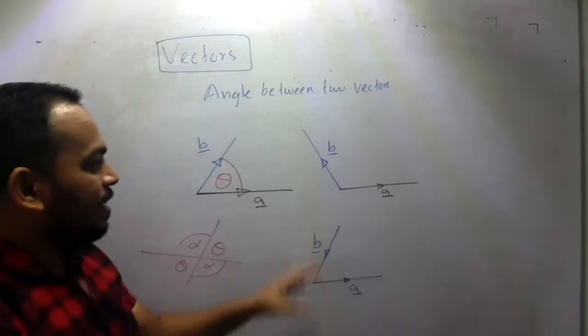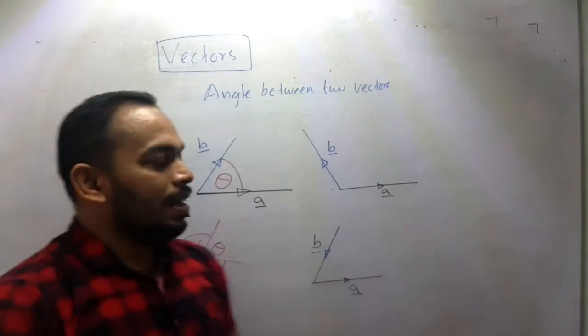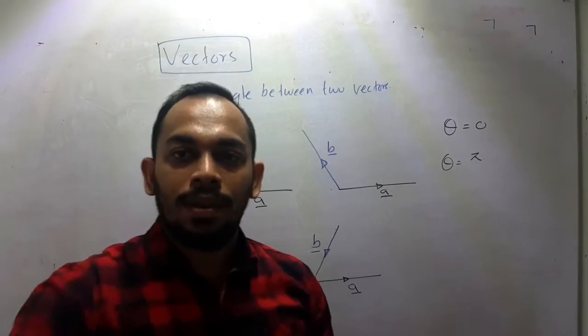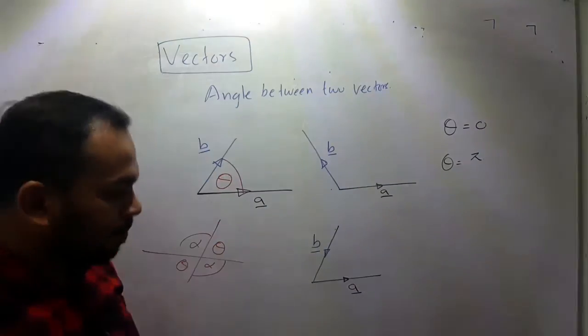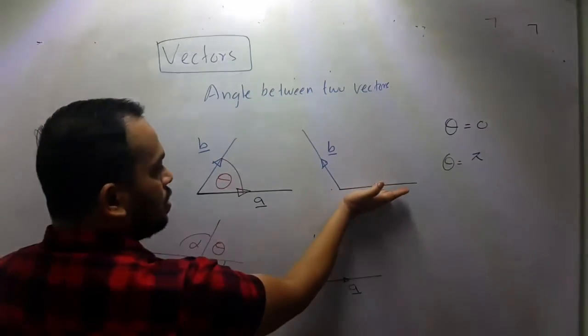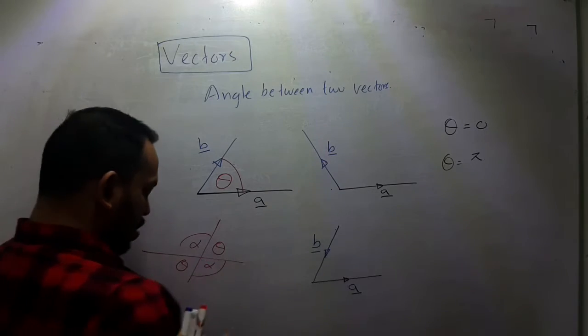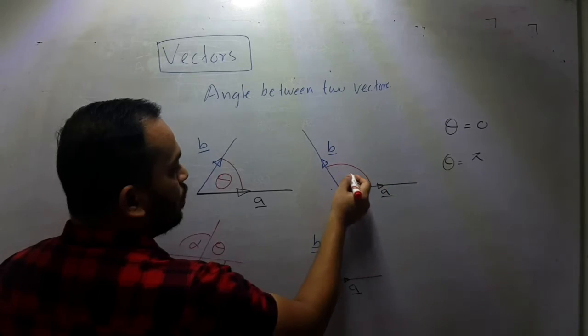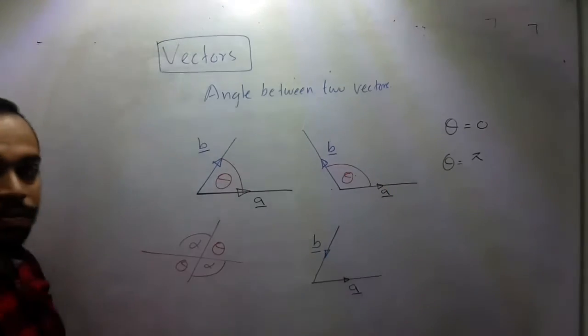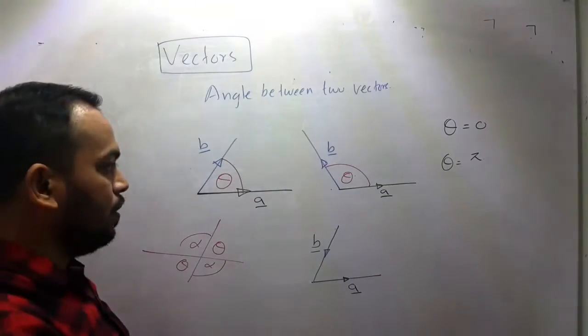In this scenario, you can see a and B. These two vectors, turn this vector towards B, head-to-head rotation. So this would be the angle. This is the angle.